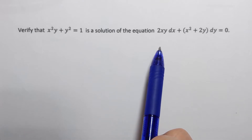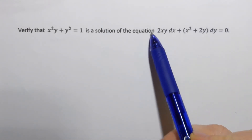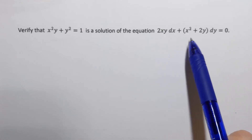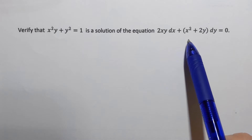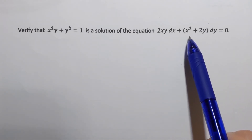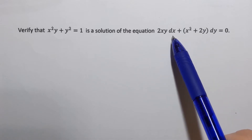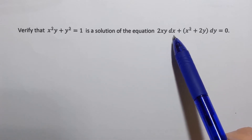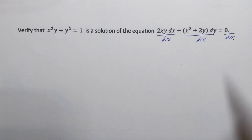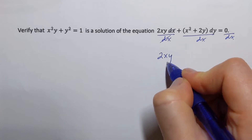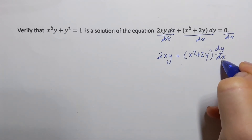Before we start with the steps, let's look at both the function and the equation. Notice that this differential equation is written in a form where we don't see a derivative — we see differentials dx and dy, but no derivative form. So we'll start by adjusting this equation such that we can see the derivative, and to do that we simply divide each term on both sides by dx. This gives us 2xy plus x squared plus 2y times dy/dx equals 0.